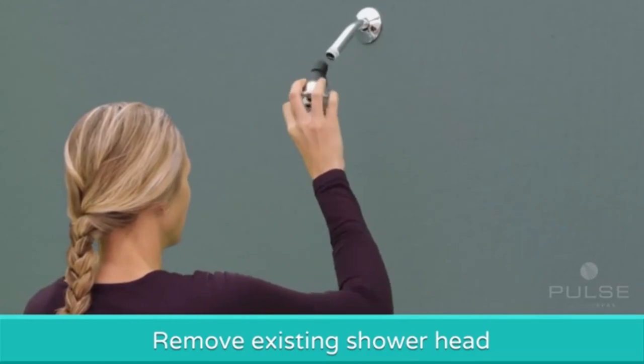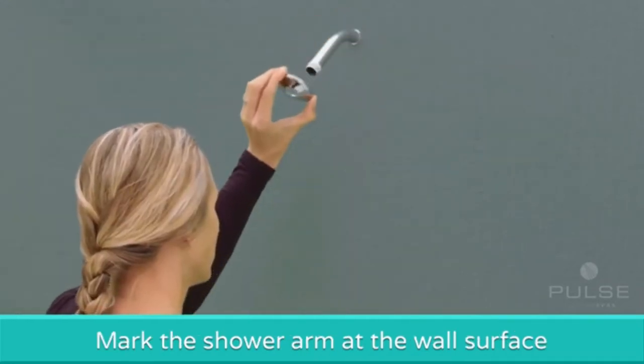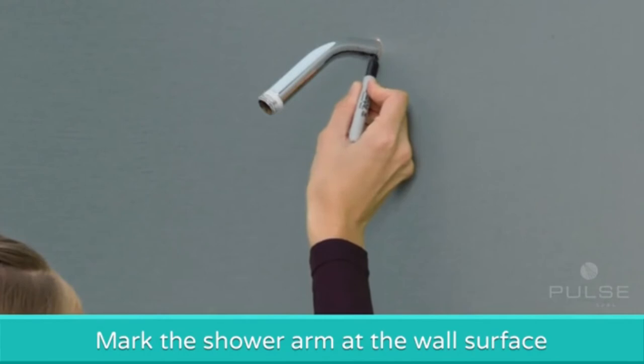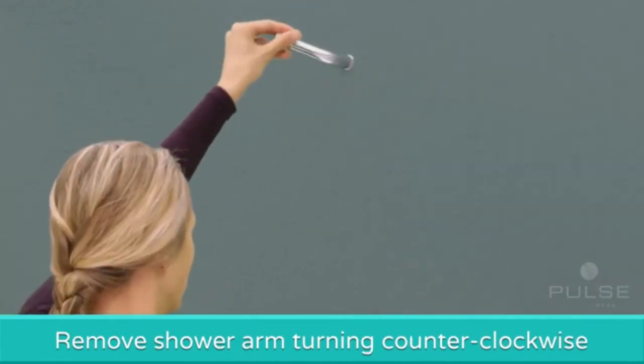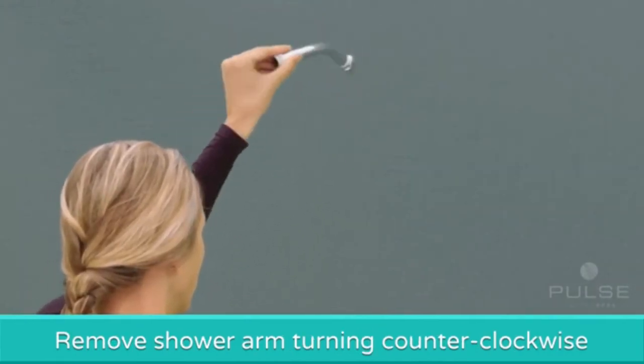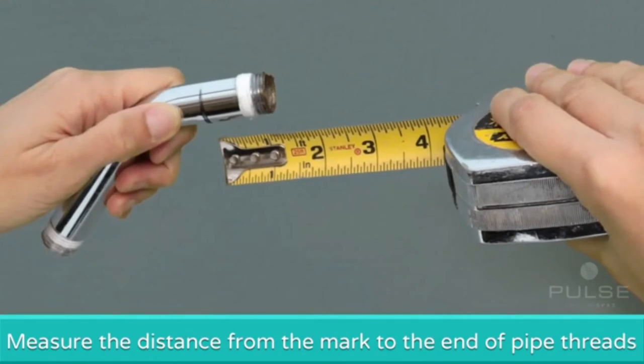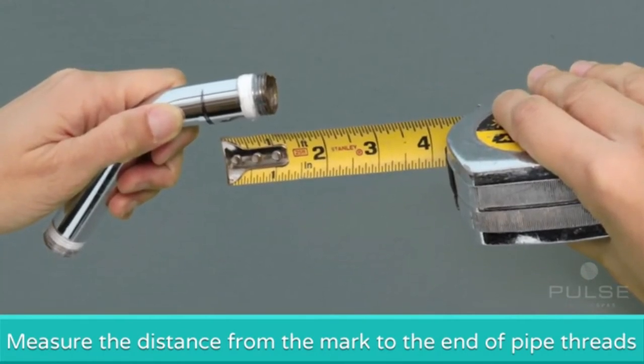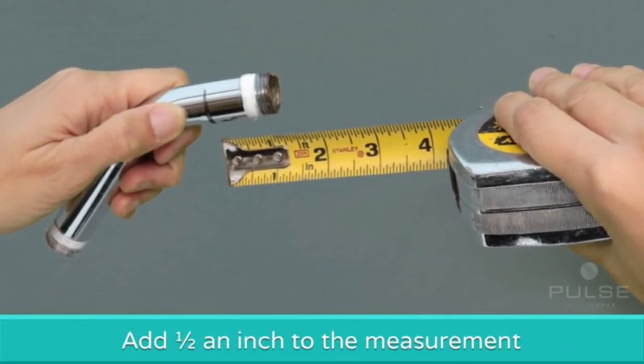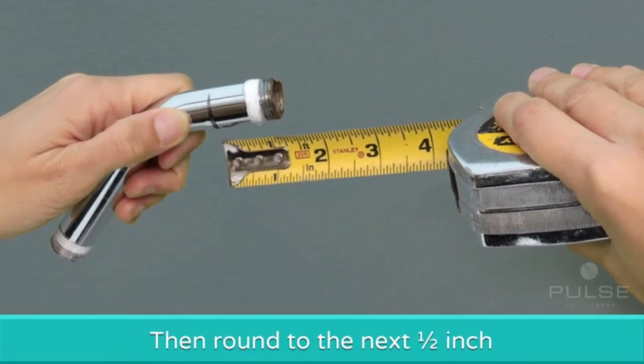Make a mark on the shower arm at the wall surface. Remove the shower arm by unscrewing counter-clockwise. Measure the distance from the mark to the end of the pipe threads. Add half an inch to this measurement and then round up to the next half inch.